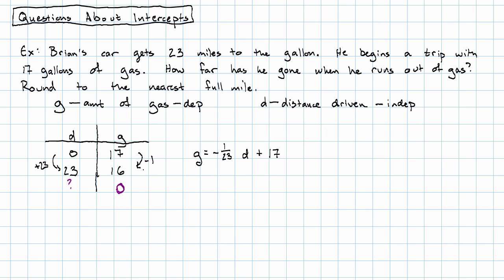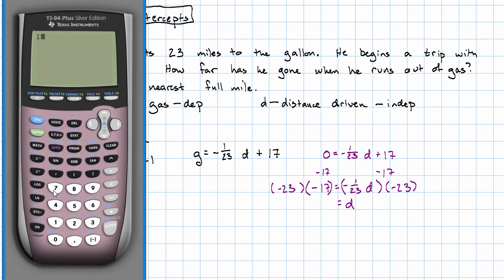Well we know what to do. We take this zero, plug it in for g, and now we solve the equation to find out what d is. We'll subtract 17 on both sides, and then we'll multiply both sides by negative 23. And we'll get d is 17 times 23, which is 391.